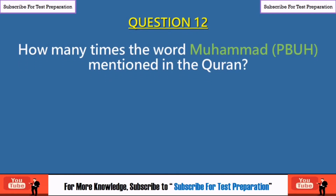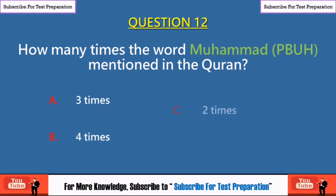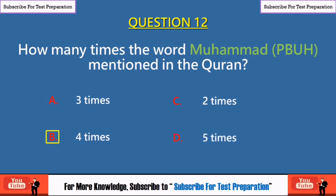Question 12: How many times is the word Muhammad (peace be upon him) mentioned in the Quran? 3 times, 4 times, 2 times, or 5 times? The right answer is 4 times.